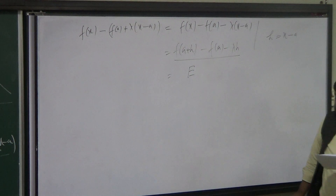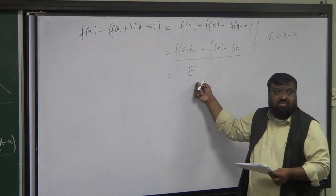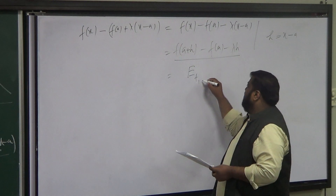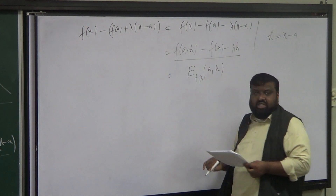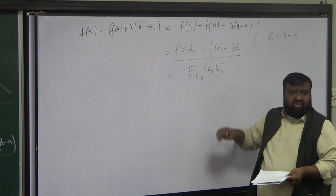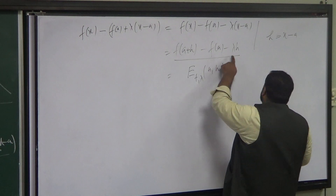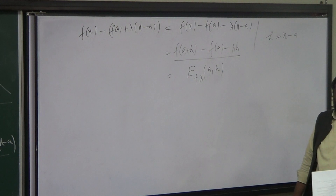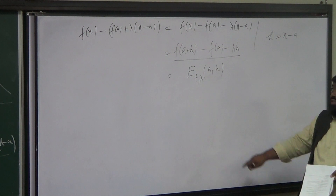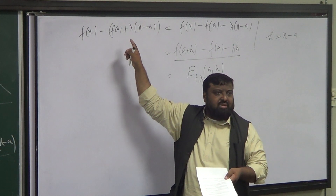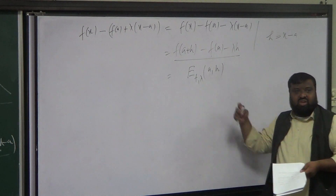So this error depends on f, on lambda, on a, and on h. What do we want to do with this error? We'd like to study under what condition this error goes to zero. The moment this error goes to zero, the difference goes to zero and hence your function can be approximated by the line.